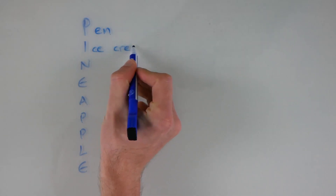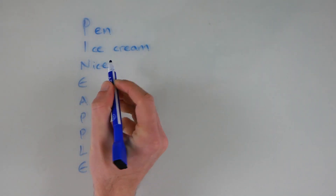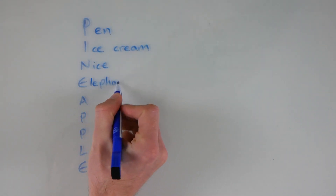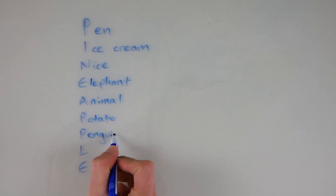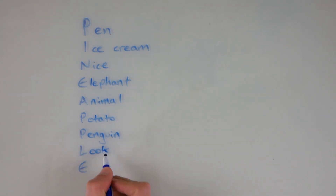For example: pen, ice cream, nice, elephant, animal, potato, penguin, look, and eat. Any repeated letters must have a different word, so they can't just write 'pen' for all of the P's. Give them a few minutes to do this and then get them all to share their ideas with the rest of the class, and you can write the best ones on the board. So this is the simple version of the game.